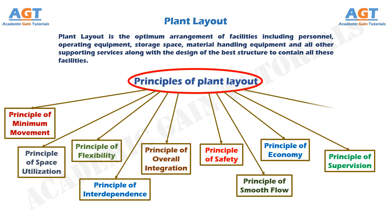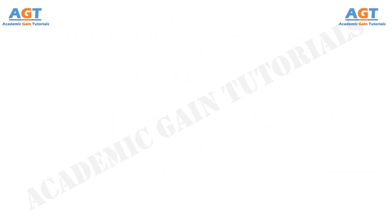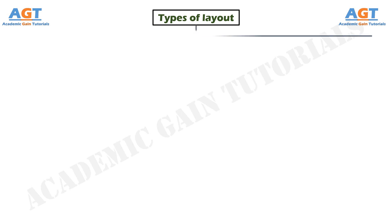And finally, number ten: the principle of satisfaction. A good layout should boost up employee morale by providing them with maximum work satisfaction. Now, let's look at the four commonly studied types of layout in a production plant.